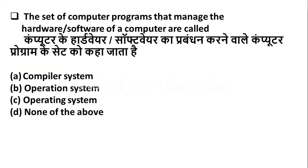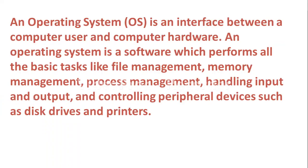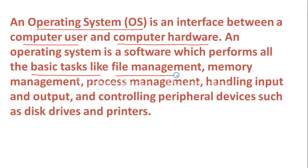The set of computer programs that manage the hardware and software of a computer are called — Option A: compiler. Option B: operating system. The set of programs that manage hardware or software of a computer are called the operating system. An operating system is an interface between a computer user and computer hardware, and it is software which performs all basic tasks like file management, memory management, process management, handling input and output, etc.